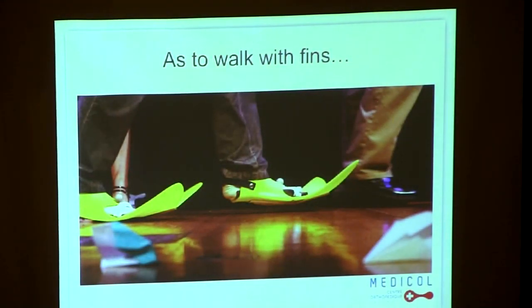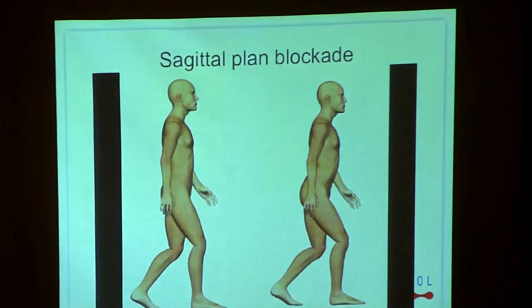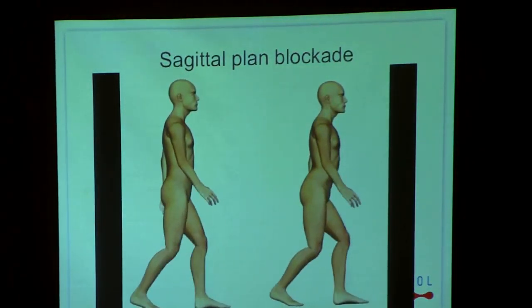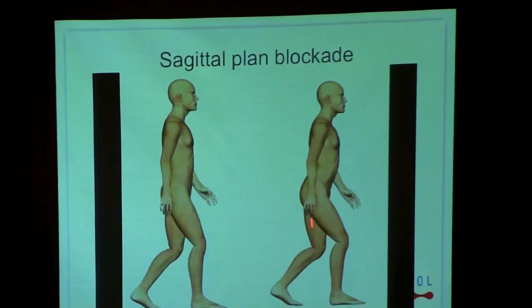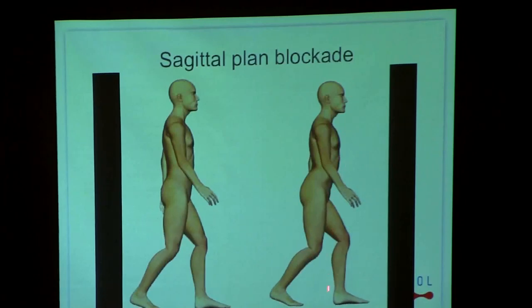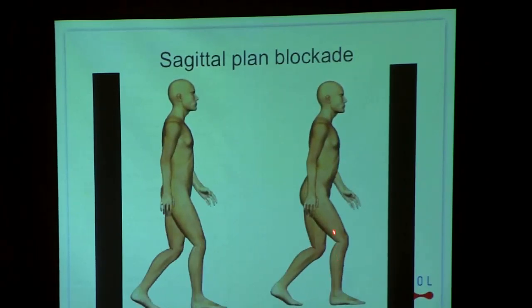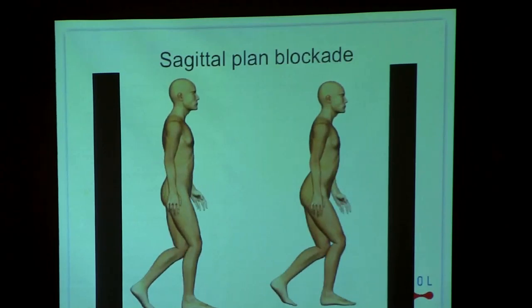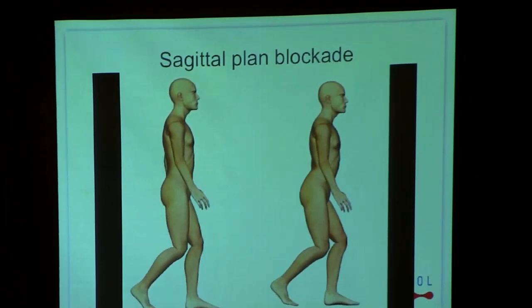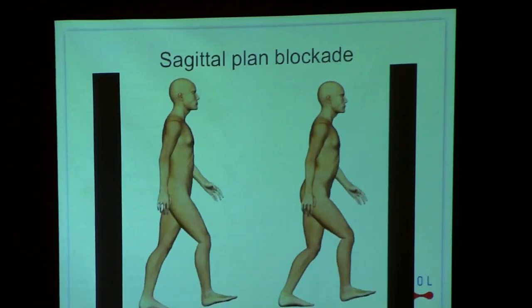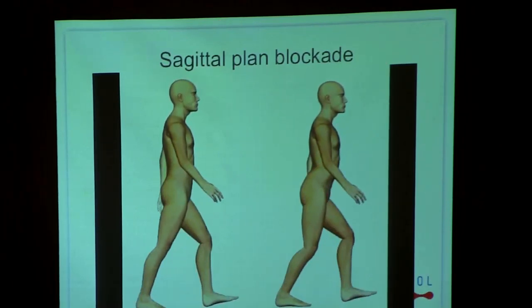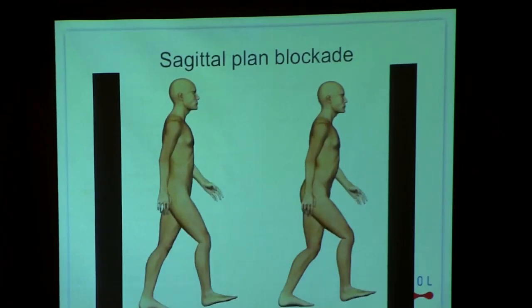The consequence is that with functional hallux limitus, we walk with a too-long foot, like with fins, and this changes completely the posture. On this video, you can see what happens: the moment of flexion is increased in all the body — increased knee flexion, increased ankle dorsiflexion, and the pelvis tilts anteriorly with anterior projection of the body.